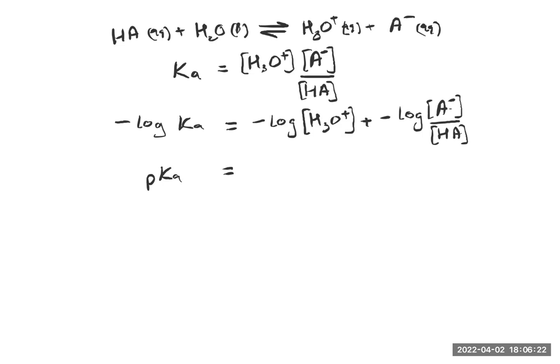And minus log of H3O+ concentration is the pH. So we have pKa equals pH minus log of A- over HA. Rearranging this, pH equals pKa plus log of A- concentration over HA concentration.